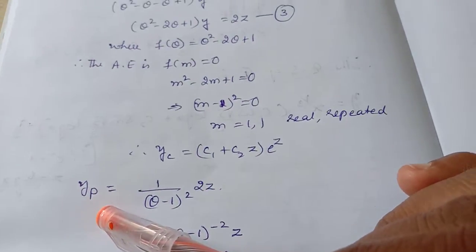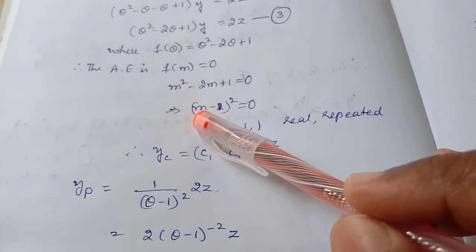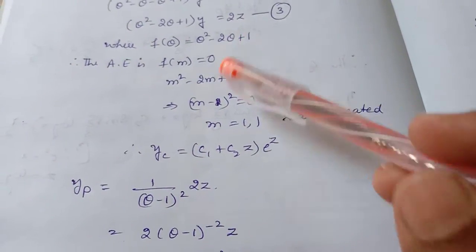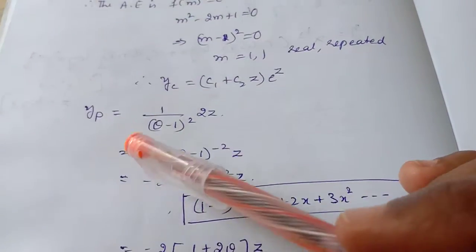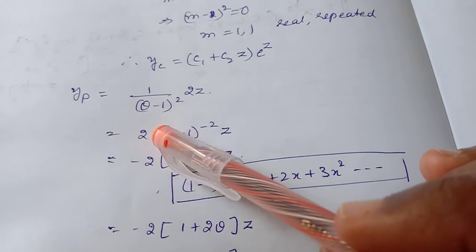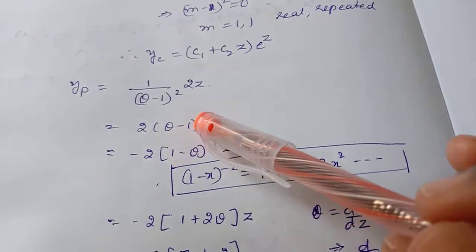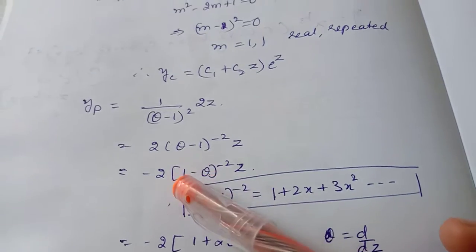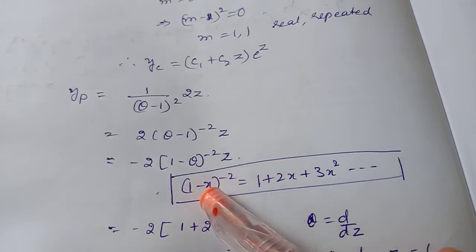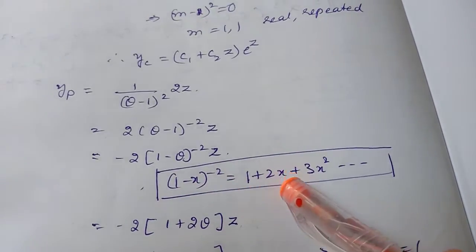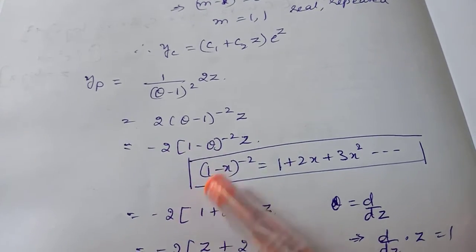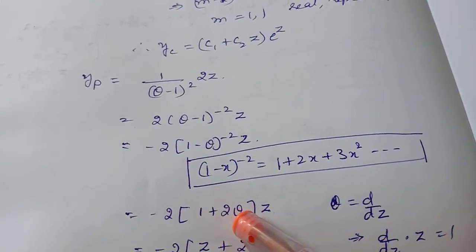Now we are finding the particular integral: 1 over theta minus 1 whole squared, with Q equal to 2z. The 2 is a constant taken out, and theta minus 1 squared in the denominator becomes theta minus 1 power minus 2 into z. This is in the form of 1 minus x power minus 2. Expanding: 1 plus 2x plus 3x squared and so on. Substituting x as theta, we get 1 plus 2 theta.